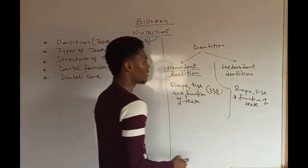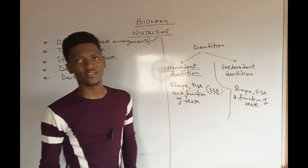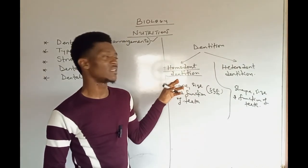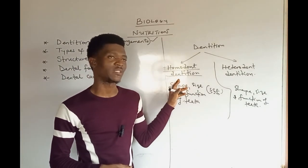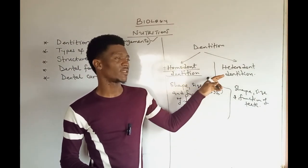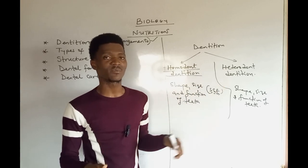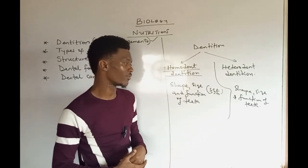What distinguishes homodonts from heterodonts is that homodonts means having the same shape, size, and function of teeth, while heterodonts means having different shapes, sizes, and functions of teeth.